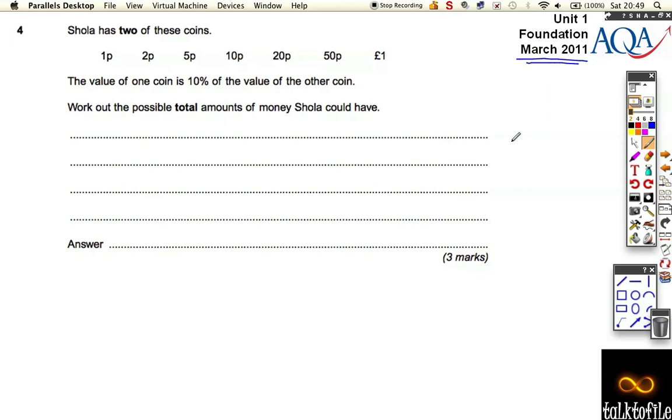The value of one coin is 10% the value of the other coin. Work out the possible total amounts you could have. Well, you have to think quite carefully about this one. This is quite tricky because you can have different combinations.